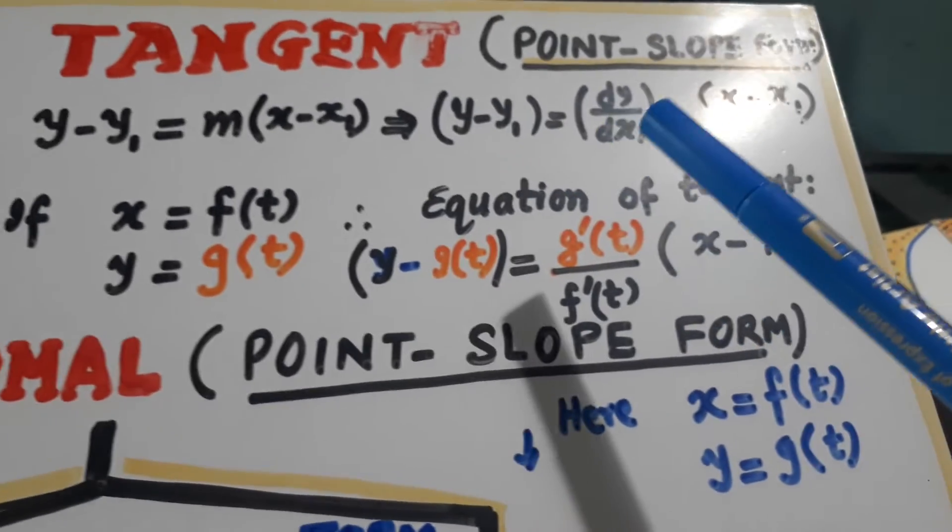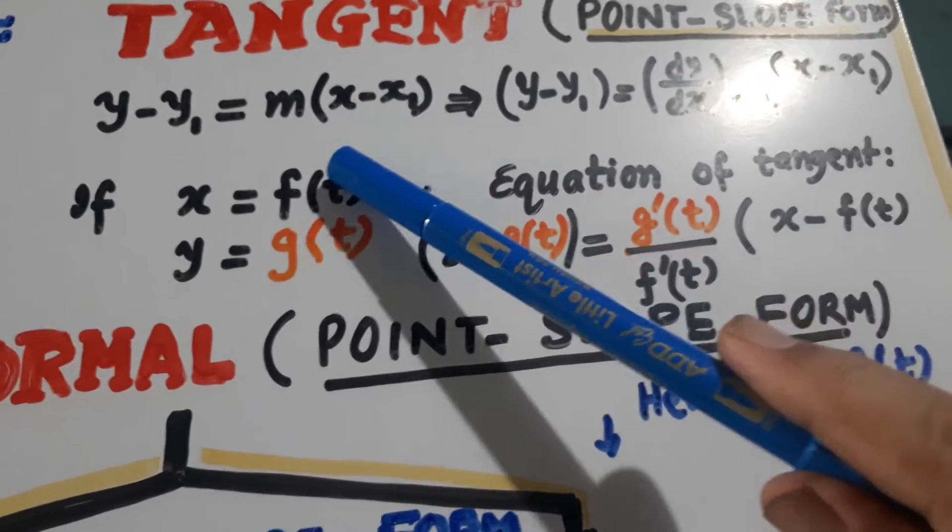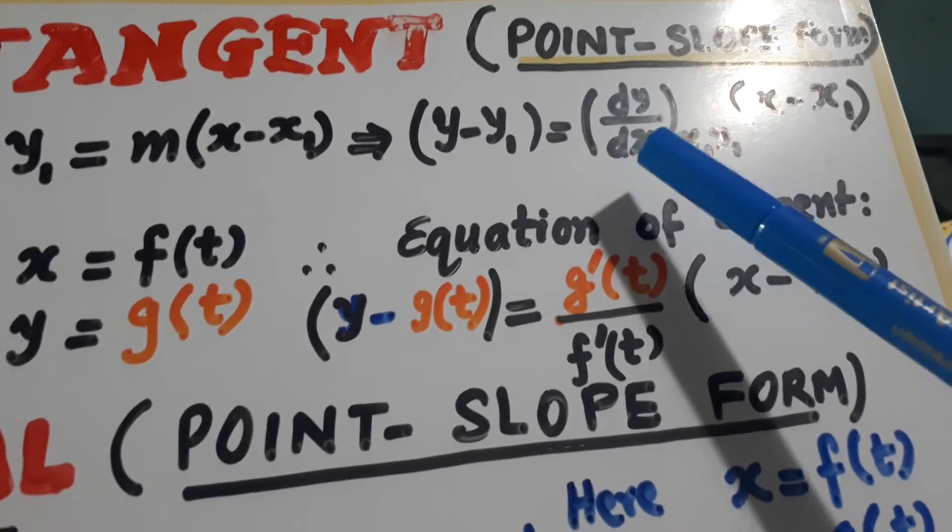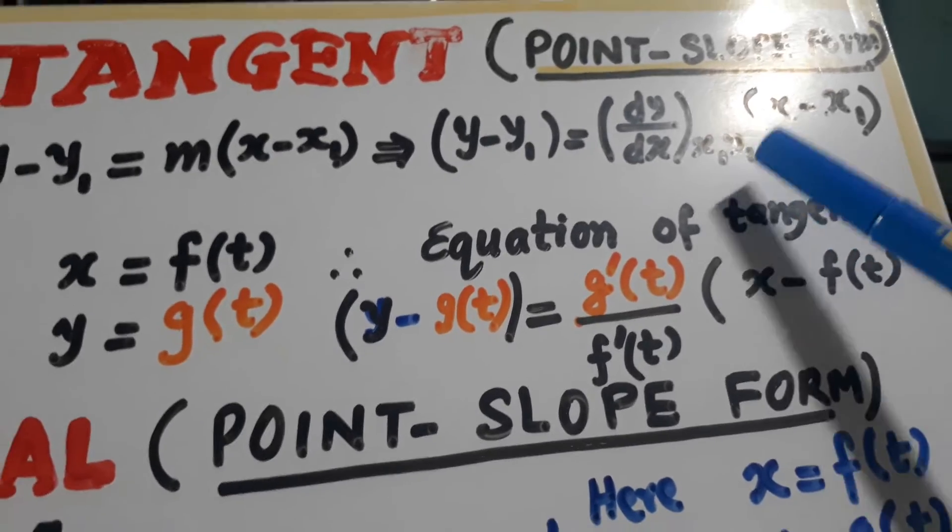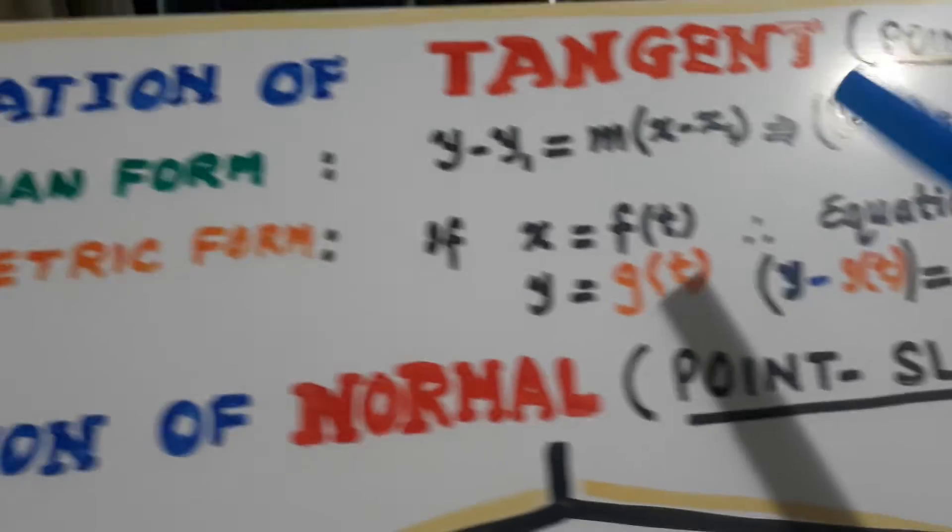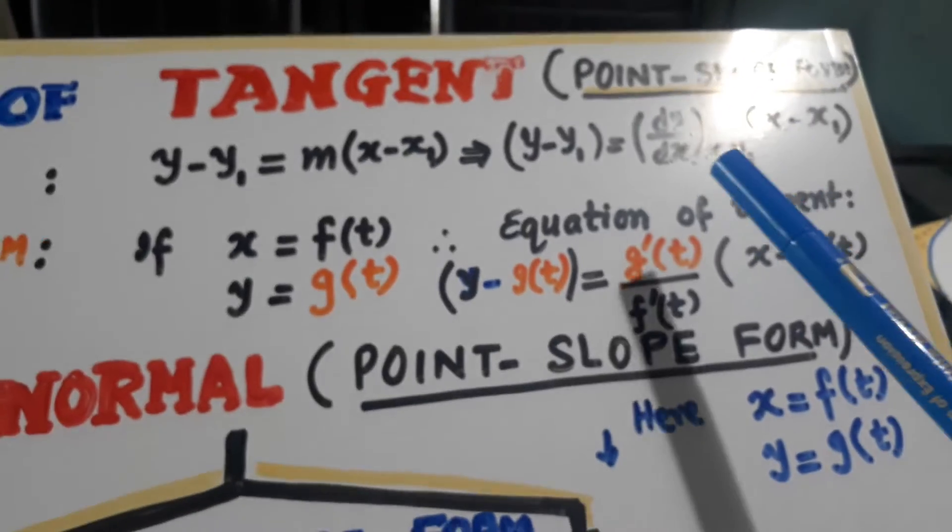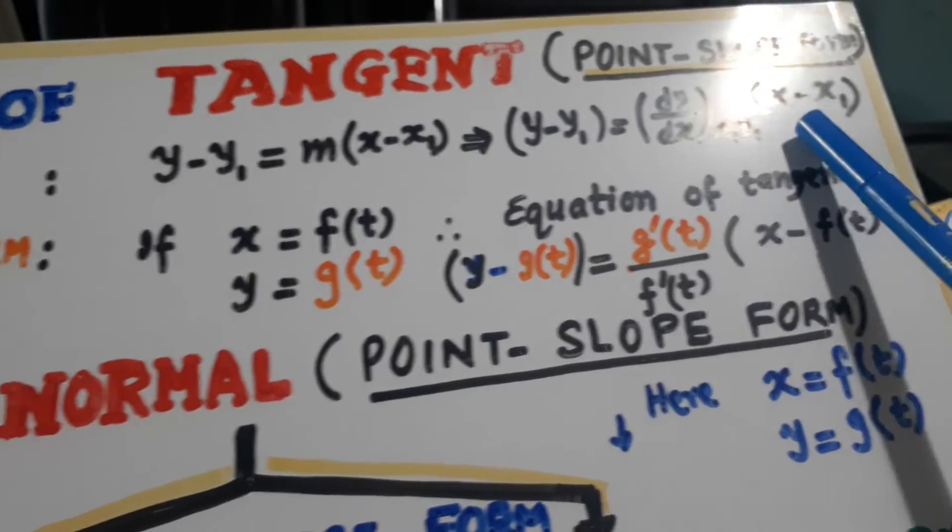So in place of m we put the slope of the tangent. And it is dy by dx at (x1, y1). So this is the equation of tangent in Cartesian form.